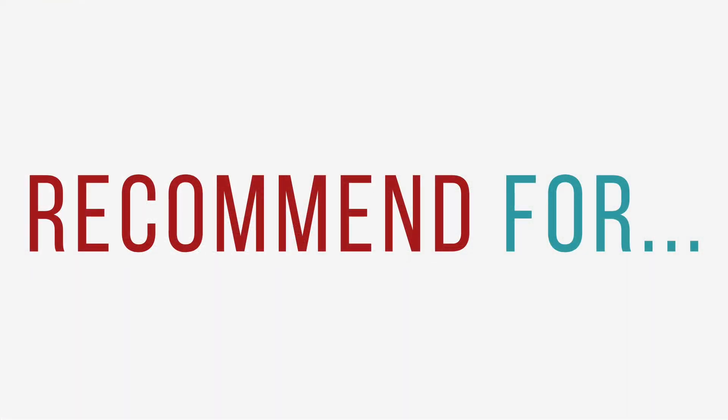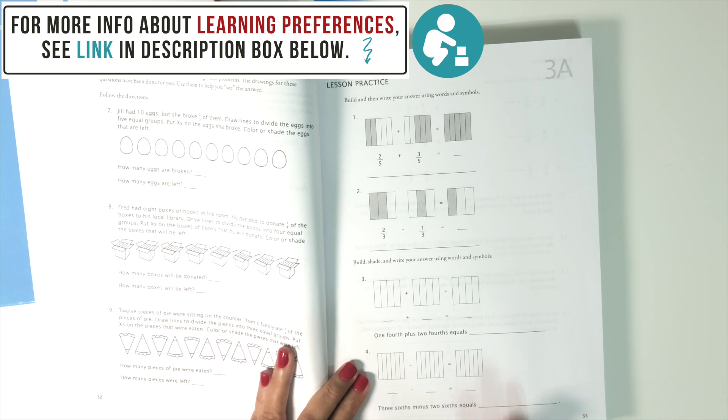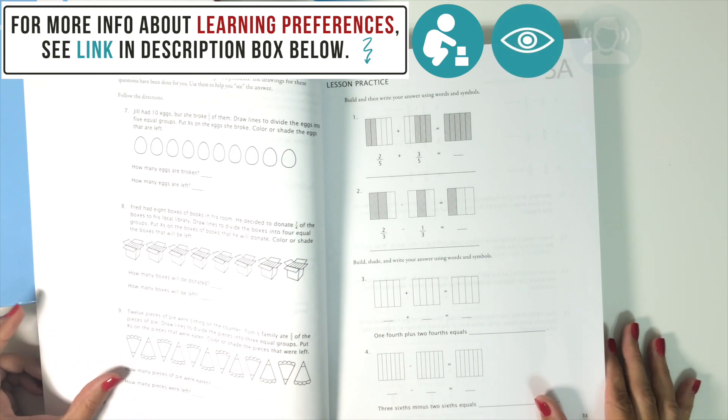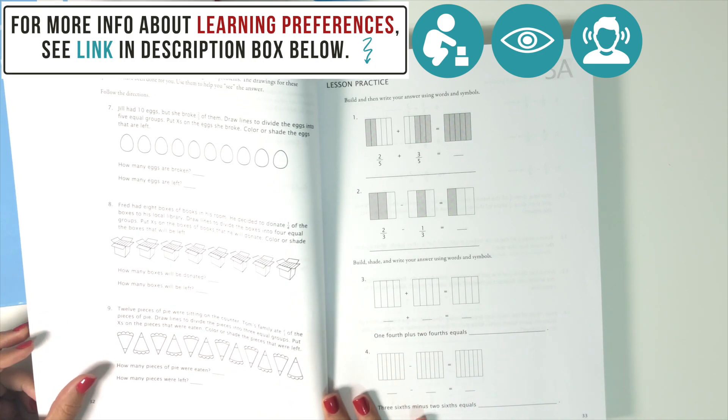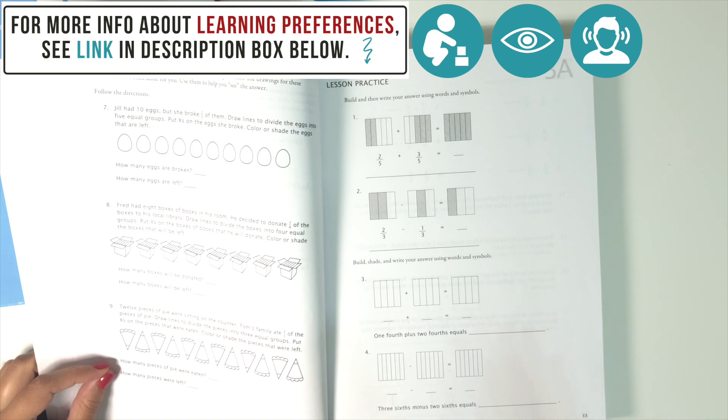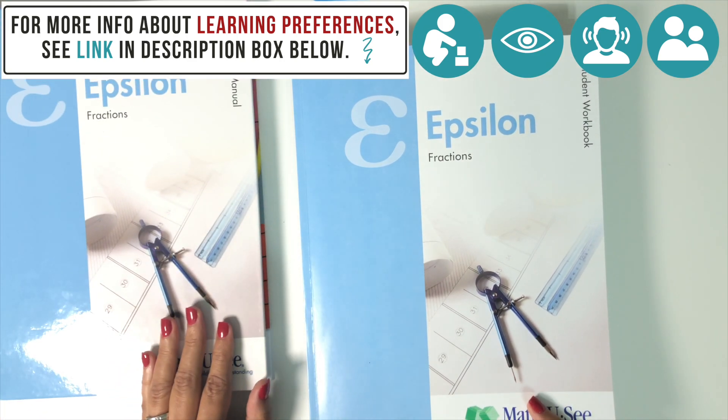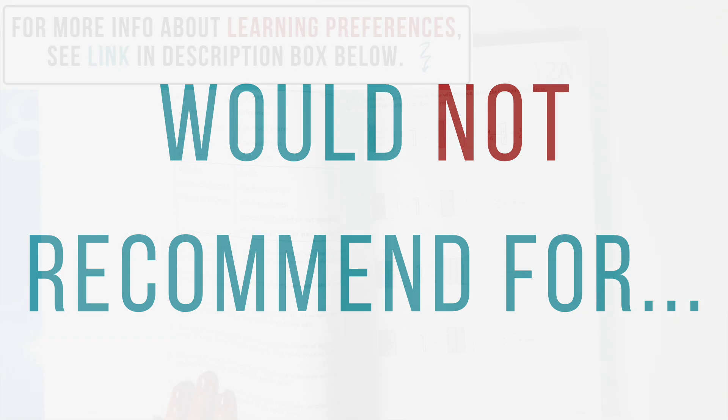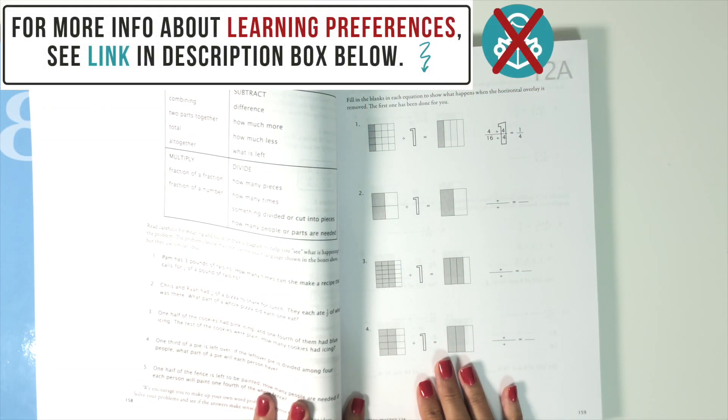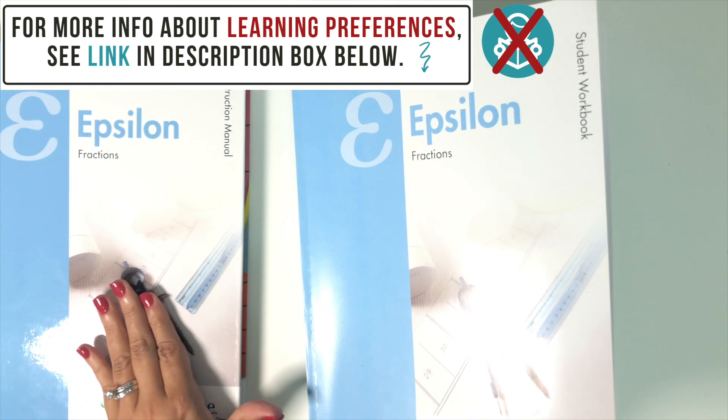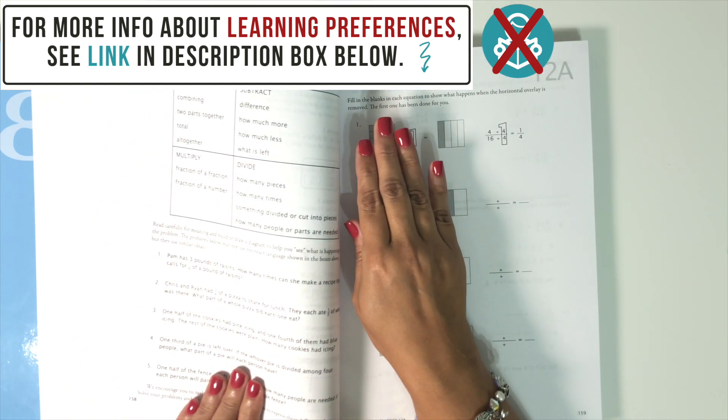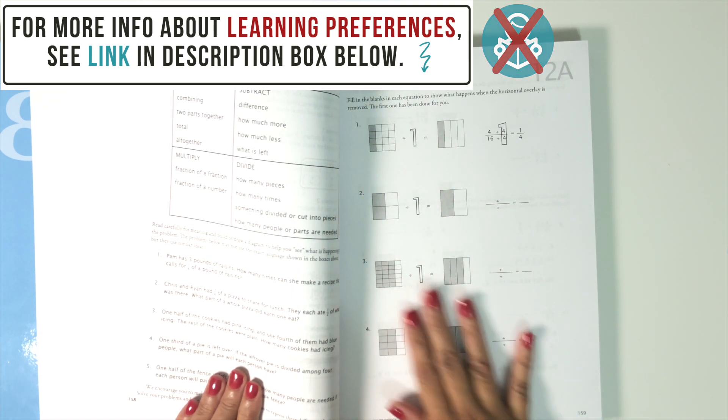I would recommend Math-U-See to students that do well with interactive learning methods since it is a workbook based curriculum with hands-on elements. A student that does well with visual and spoken word learning methods will also appreciate the instructional DVD but if a student likes one-on-one learning it will probably be better to use the instruction manual and teach them that way. I would not recommend Math-U-See to students who strongly prefer learning via the written word because instruction is given through the DVD and through the instruction manual which is written for the parent, it's not given in the worksheets. I mean you get your instructions about what to do in each section but it doesn't explain anything to you.